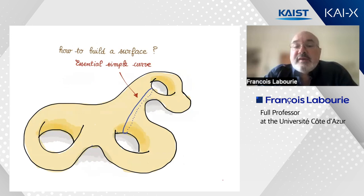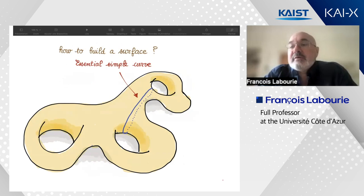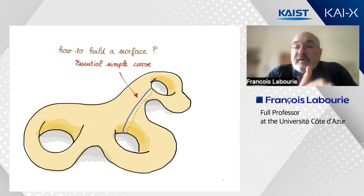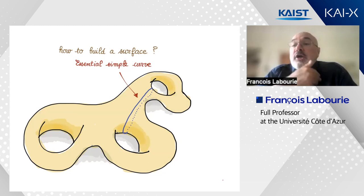The first thing I'll try to explain is that surfaces are built out of elementary pieces. When you start with a surface, there is a process that transforms it into elementary blocks. You do this by cutting your surface into smaller pieces.